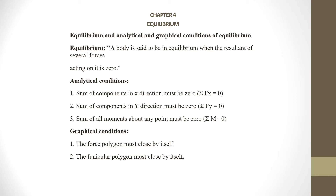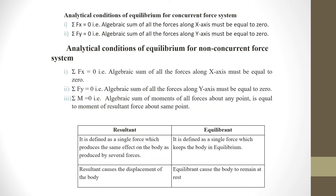Next, we will see the Analytical Condition of Equilibrium for a Concurrent Force System. For a Concurrent Force System, there are two conditions: summation Fx equals zero and summation Fy equals zero. Summation Fx refers to forces in the x-direction and summation Fy refers to forces along the y-direction.